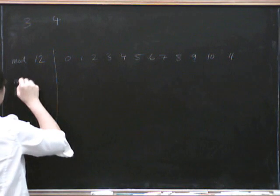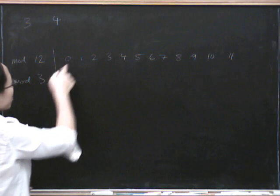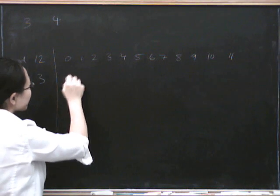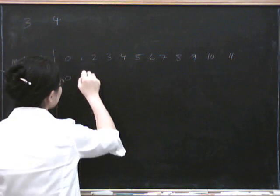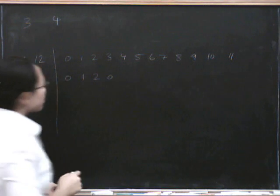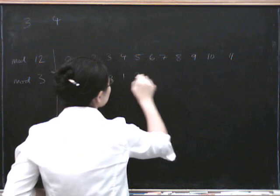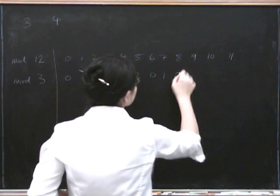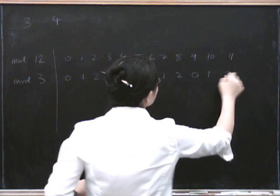Okay, now what can you be mod 3? Well, if you're 0 mod 12, then you're definitely 0 mod 3, right? And then we get 1, 2. If you're 3 mod 12, then you're going to be 0 mod 3 again. 1, 2, so it's 0, 1, 2, 0, 1, 2.